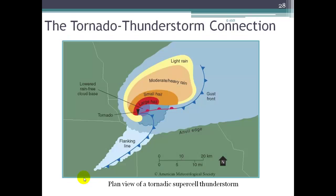Here's a plan view of a tornadic supercell with the popular hook shape that shows up on Doppler radar and makes it possible to identify these supercells that are likely to have mesocyclones. Note the scale — this is 10 miles, just the size of a supercell. Here's our anvil edge spread out at the tropopause. The dry portion of the supercell is on one side, most precipitation on the other. The tornado is right at that hook. If we're going to have hail, the biggest hail is closest to the tornado, becoming smaller hail, then heavy rain, then lighter rain further out.